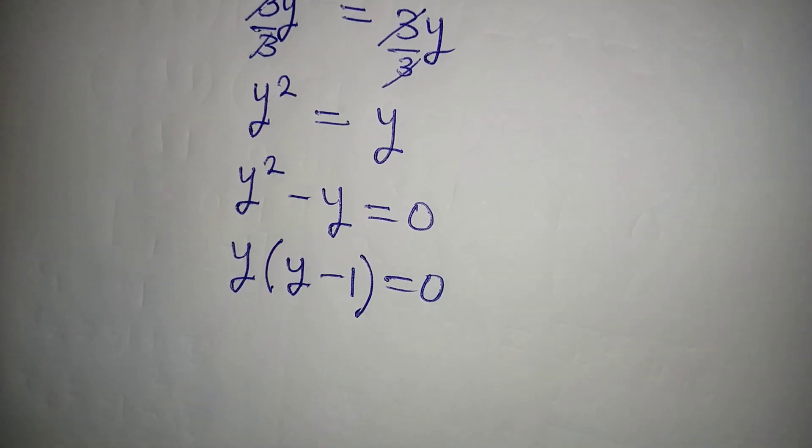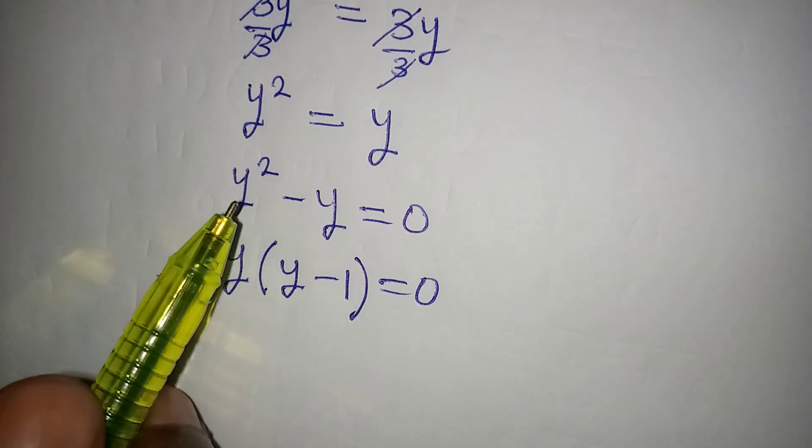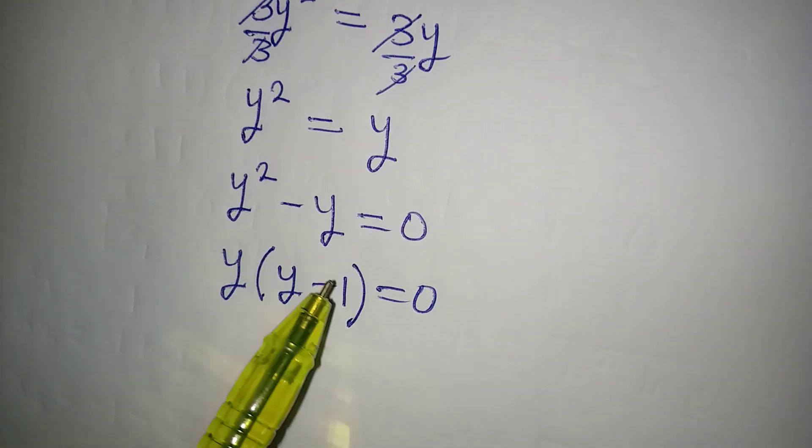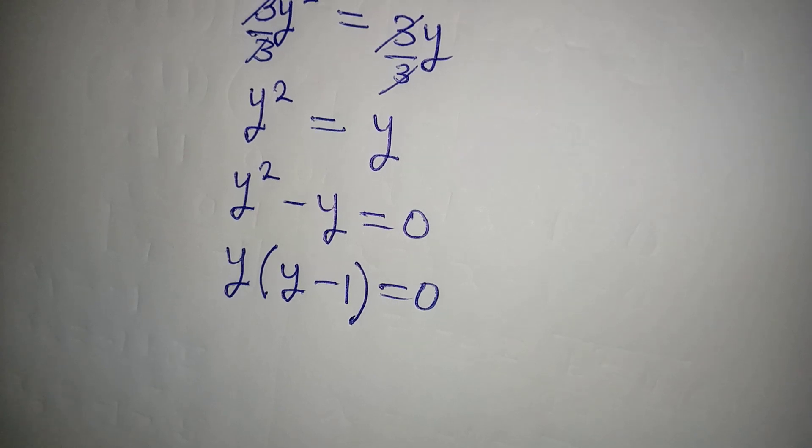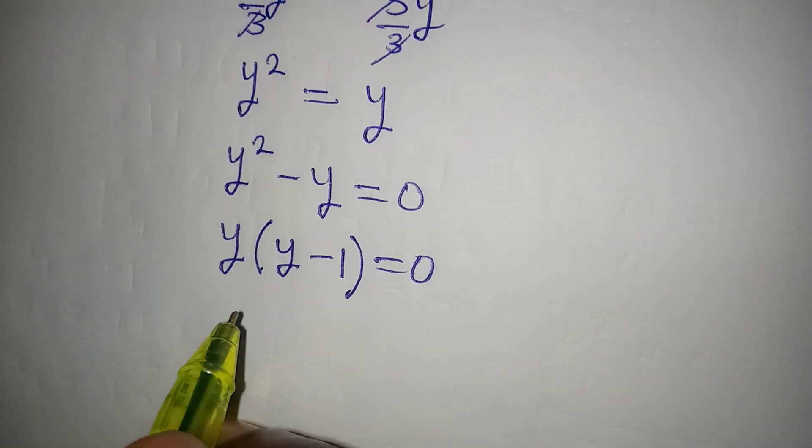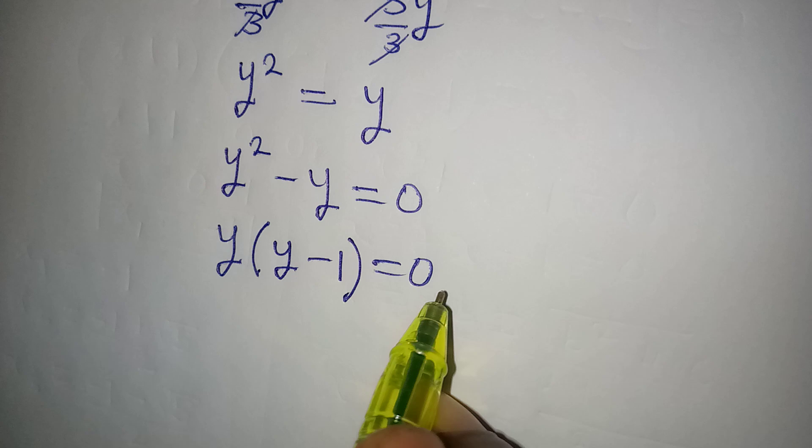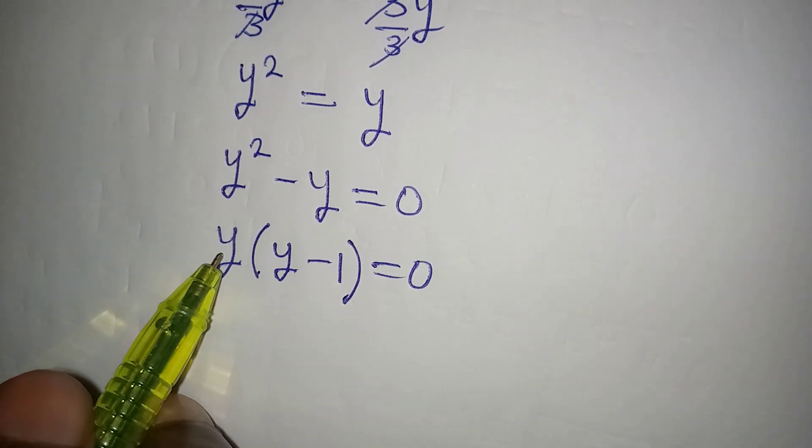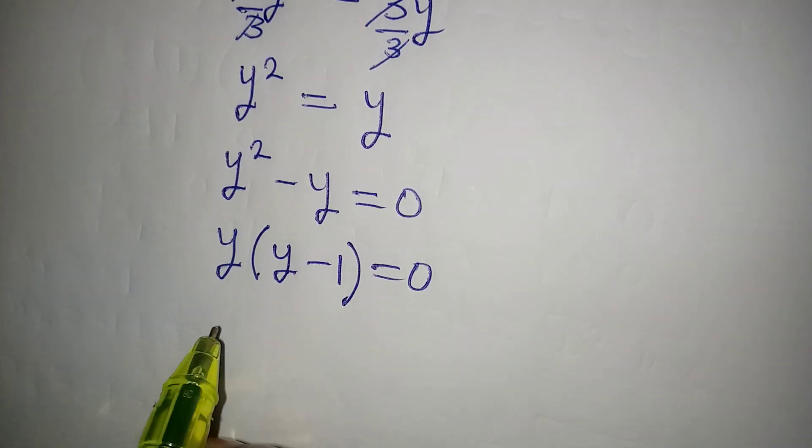If you want to know you're right, open the bracket: y times y is y squared, y times minus 1 is minus y, so we are still okay. Then the next thing is to equate either this or this to 0.